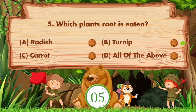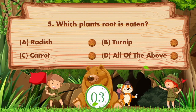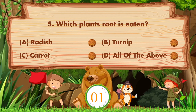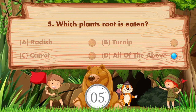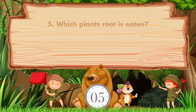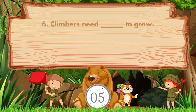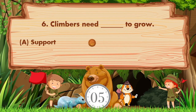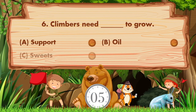Which plant's root is eaten? Option A is radish, B turnip, C carrot, D all of the above. Answer is option D: all of the above.